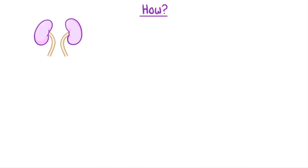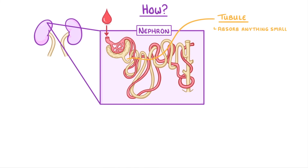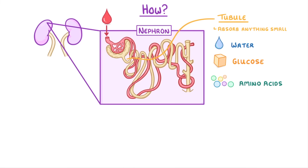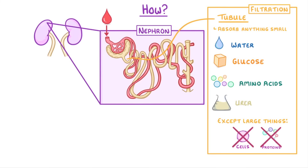Inside each of our two kidneys are around a million of these structures called nephrons. We're not going to cover all of the details in this video, but this yellow tube-like thing is called a tubule. And as blood passes through the kidneys, these kidney tubules absorb anything small — so water, glucose, amino acids, urea — pretty much everything except the really large things like proteins and cells. And we call this process filtration.